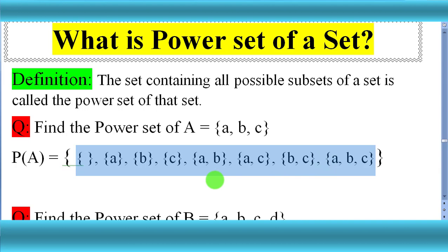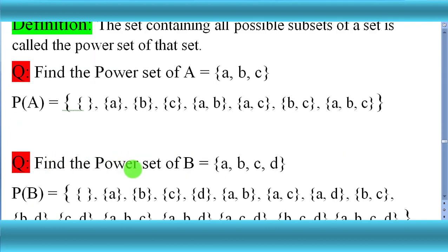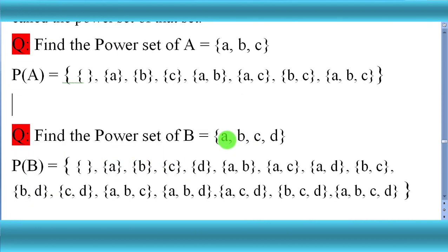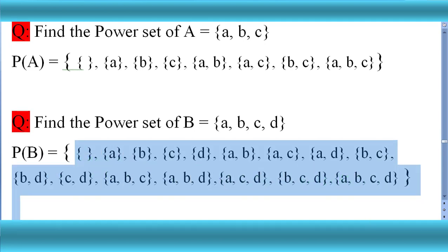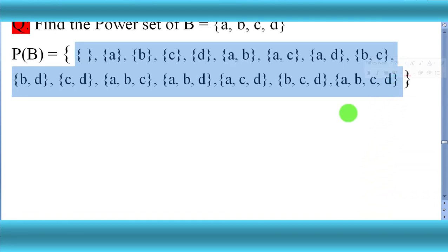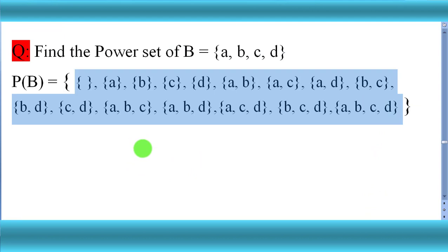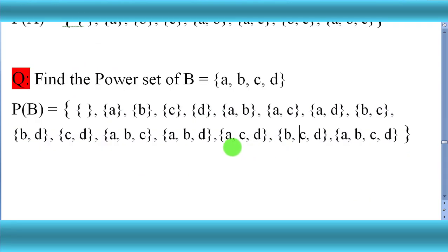We have another example: find the power set of set B which has four elements a, b, c, d. The method is the same. Power set of B is equal to — first write all subsets, then enclose all those subsets in curly brackets. This is called the power set of set B.